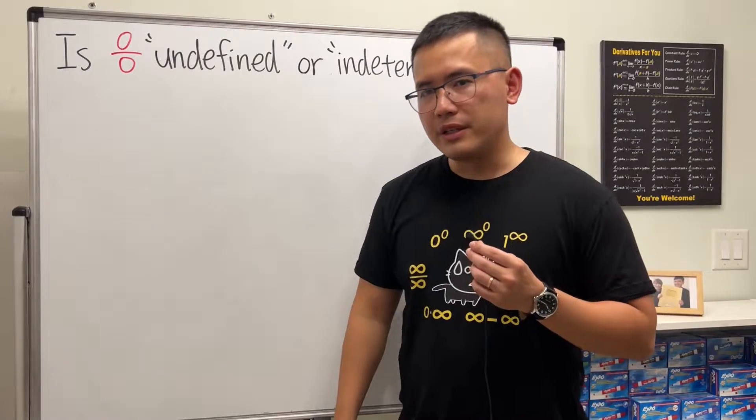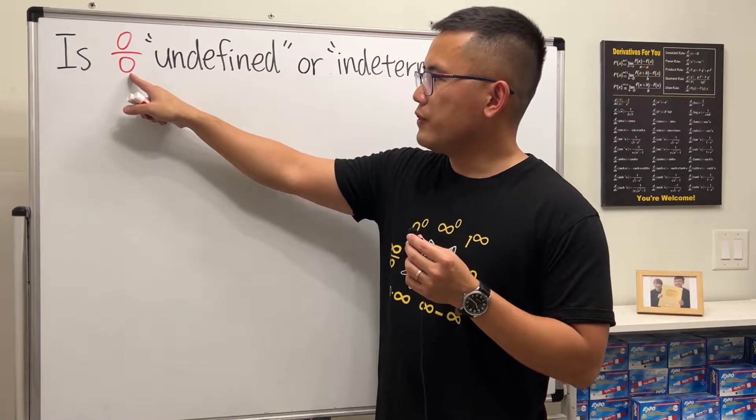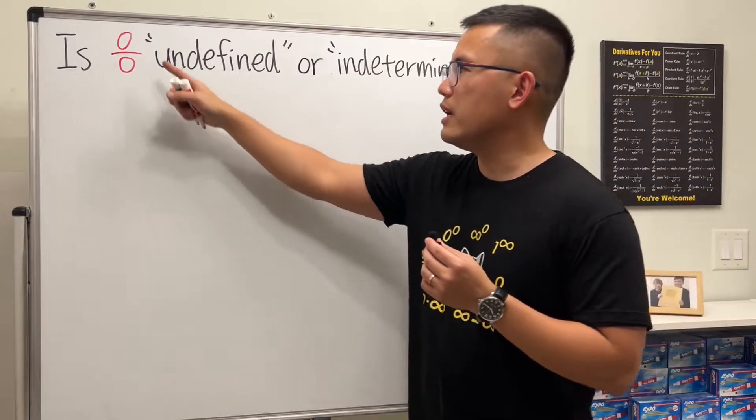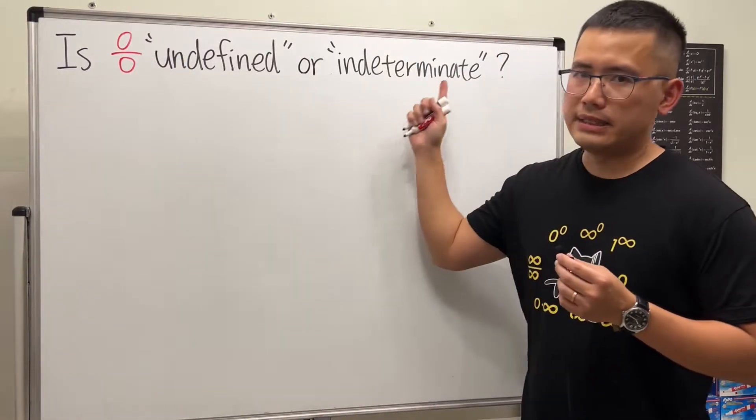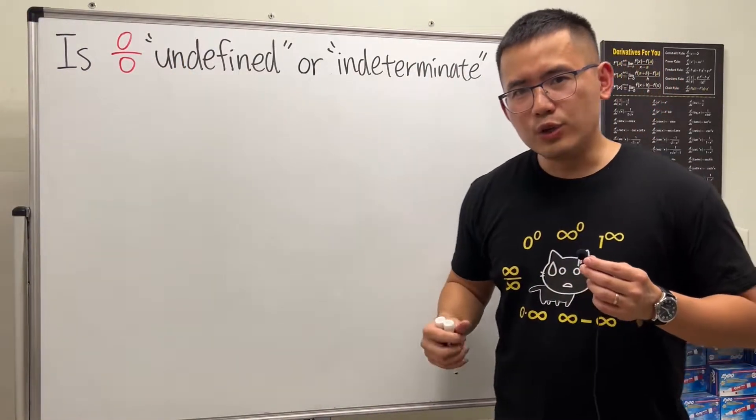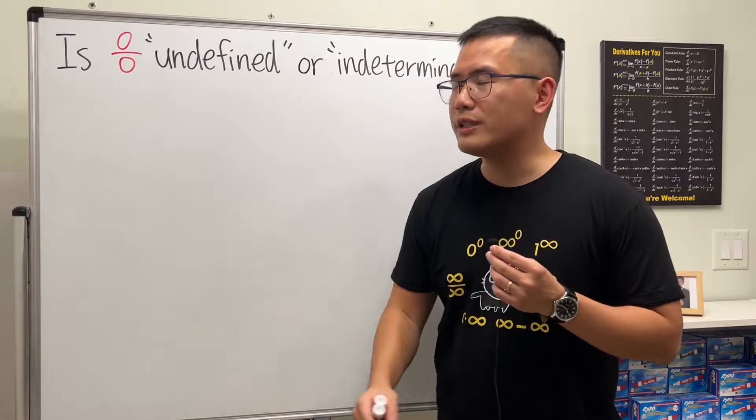In particular, we would like to know: do we say zero over zero as undefined or do we say zero over zero as indeterminate? In order to answer that question, we will have to first know when do we use undefined and when do we use indeterminate.